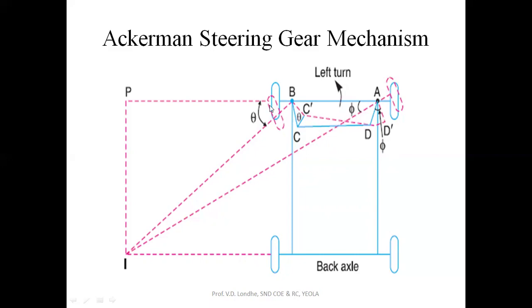The basic condition for proper steering is that both center lines of the front and rear wheels should meet at one common point — the instantaneous center. When turning, the effort required is less compared to the Davis steering gear system, as friction is minimum and the effort required for turning the vehicle is also less. The Ackermann steering gear mechanism is now commonly used in day-to-day practical life and in commercial vehicles running on the road.